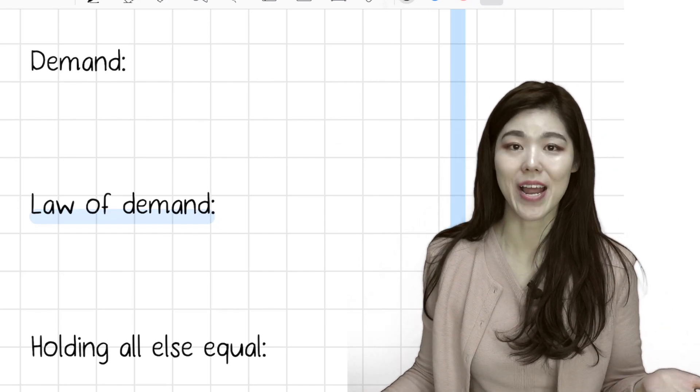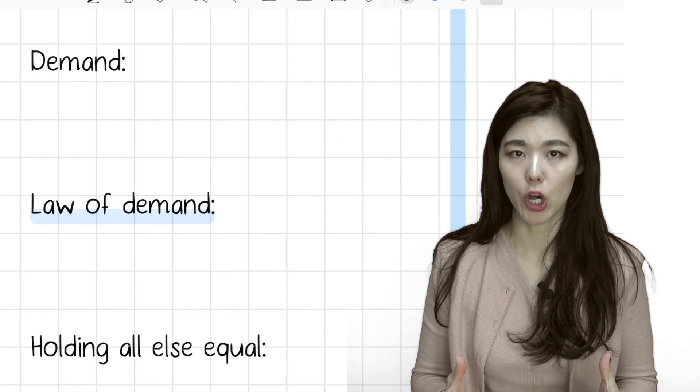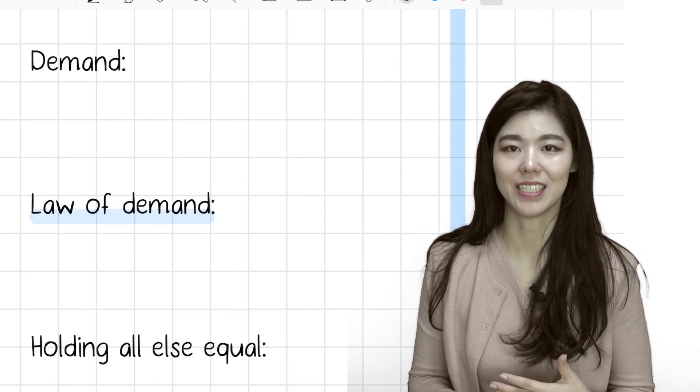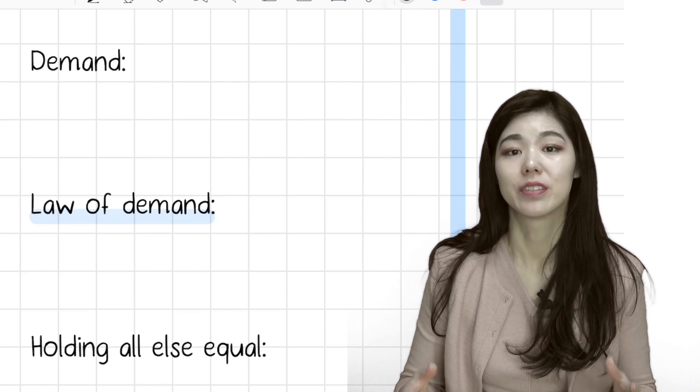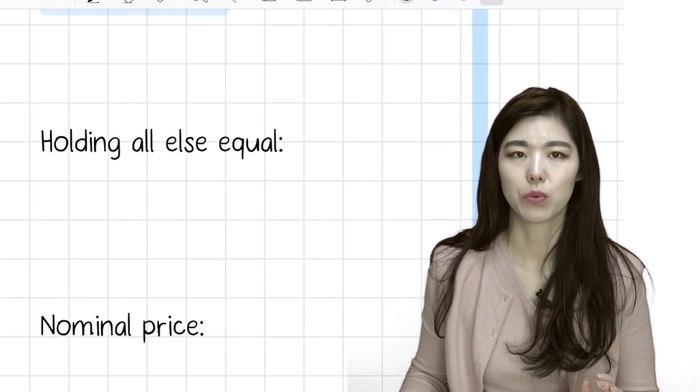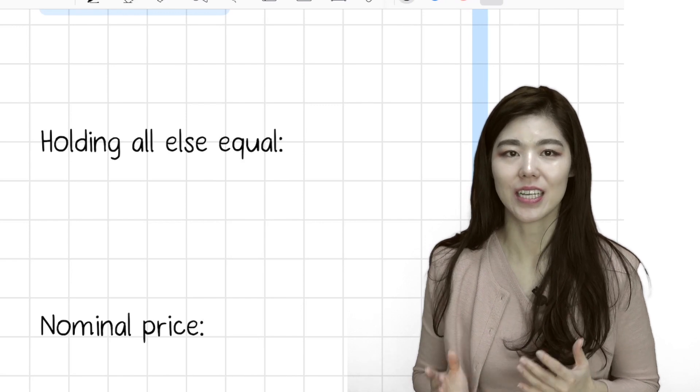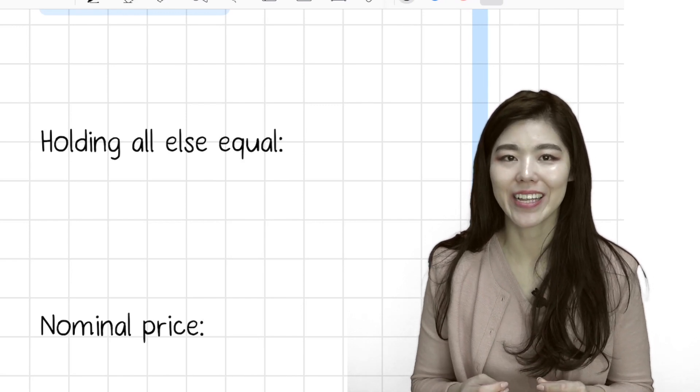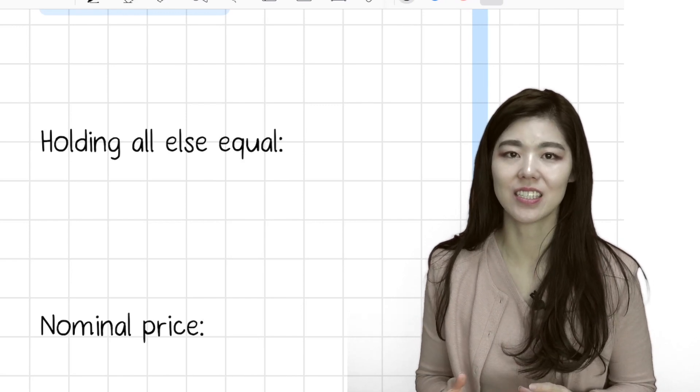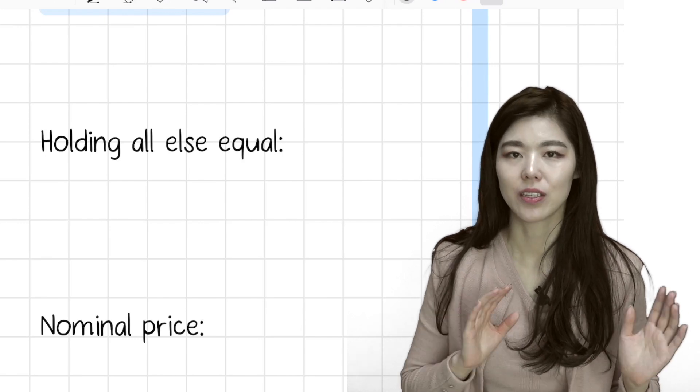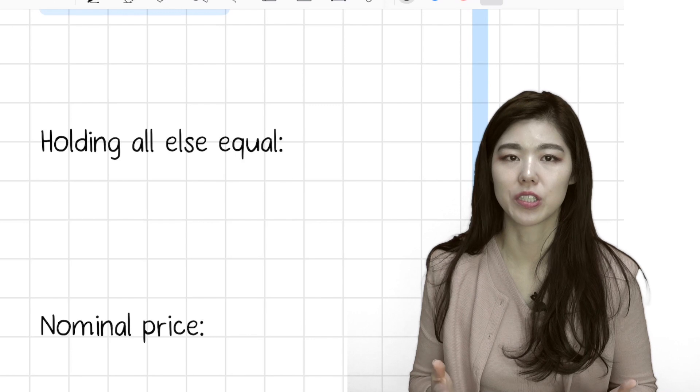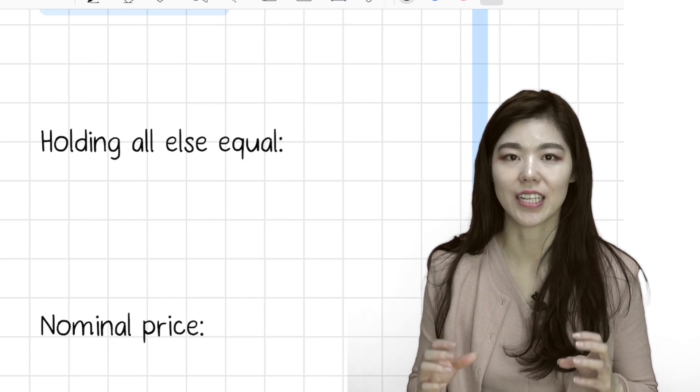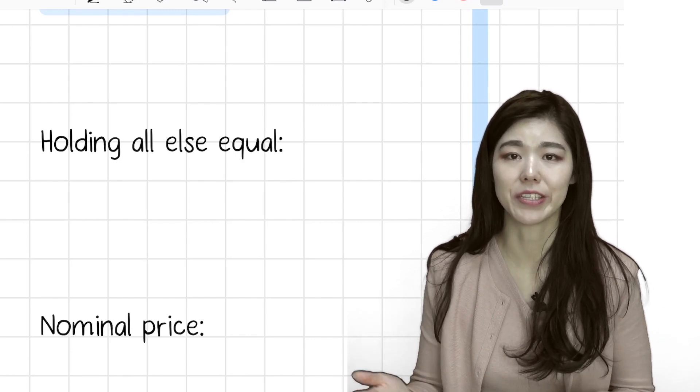That's the law of demand. So when the price is lower, the quantity demanded increases. When something is expensive, the quantity demanded will decrease, holding all else equal. You may come across the words holding all else equal in economics. It just means that only price changes and other factors like price of substitutes don't change. Just remember that holding all else equal means that the only factor that changes is the factor just mentioned in the question.